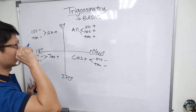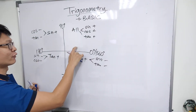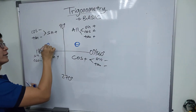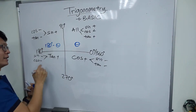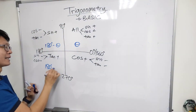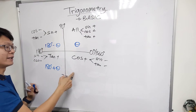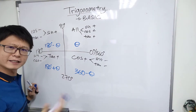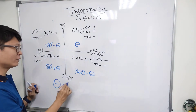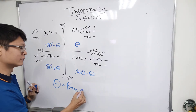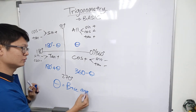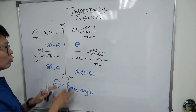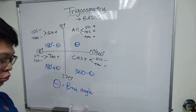After that you need to know the formula. The formulas are: theta, 180 minus theta, 180 plus theta, and 360 minus theta. Theta is what we call the base angle — 'sudut asas' — the base angle. Now let's see how to use all of this.